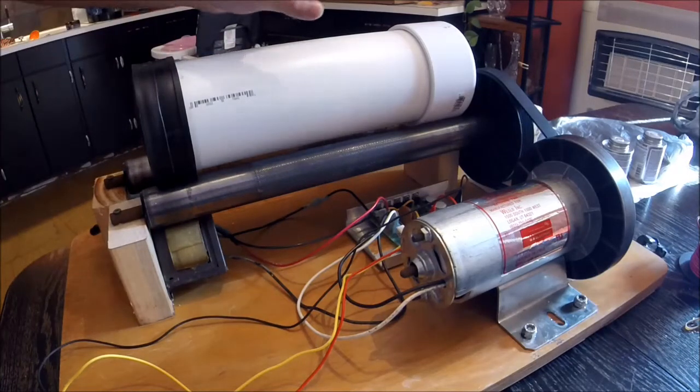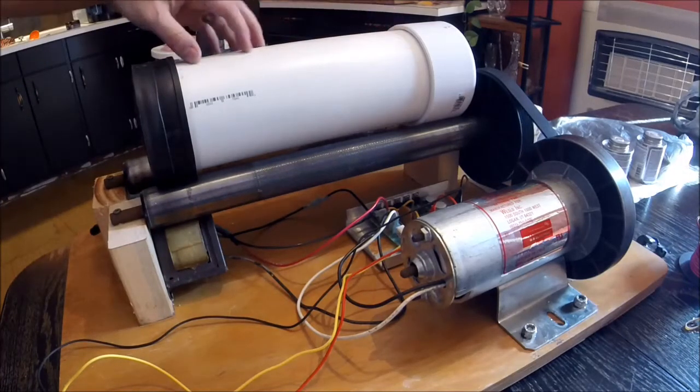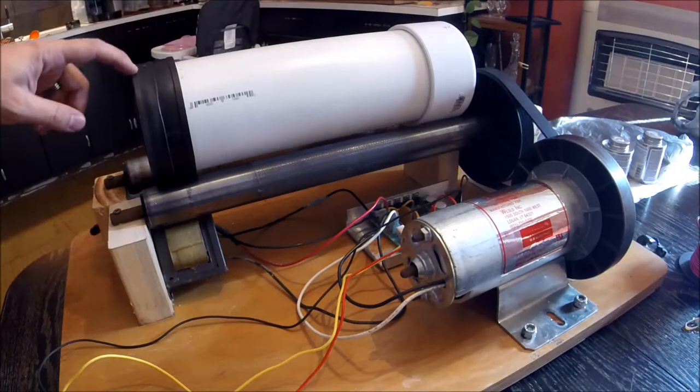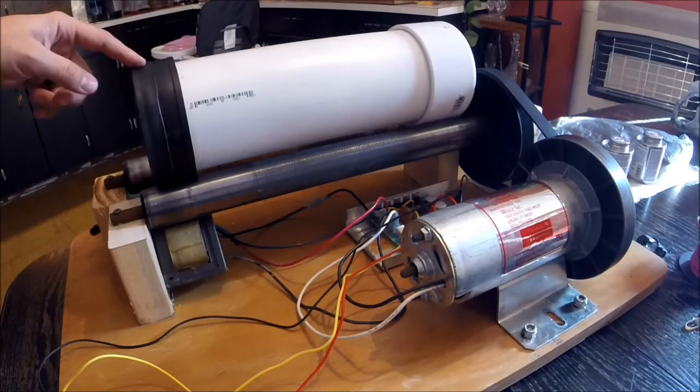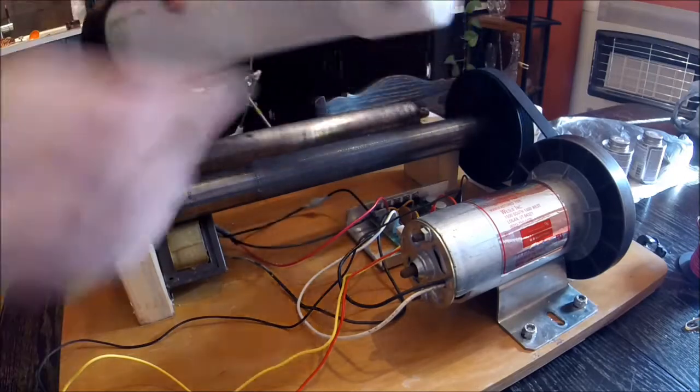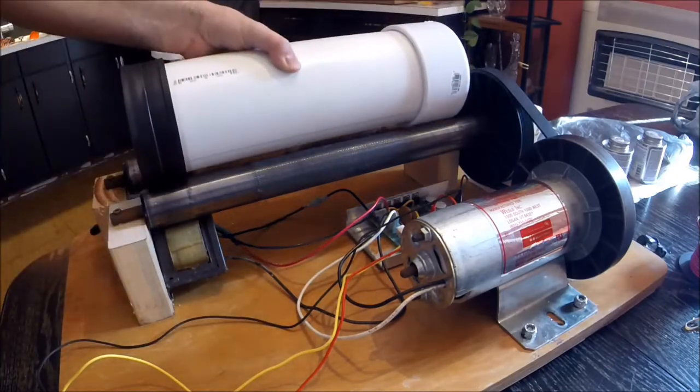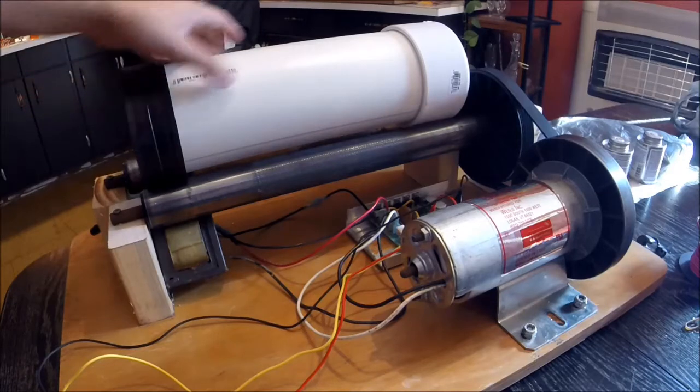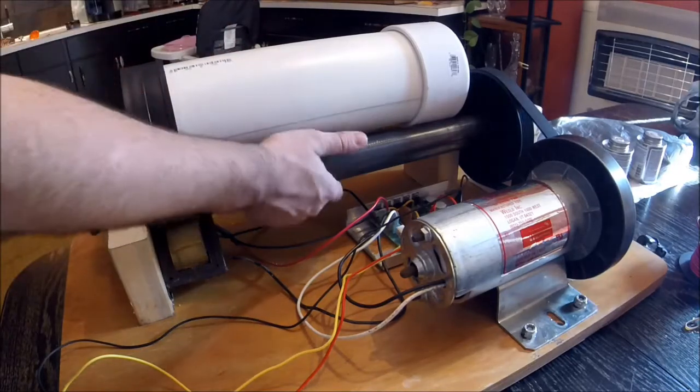So this is a 14 inch piece of 4 inch PVC which has the removable rubber end caps that you can buy at the hardware store. This one has been glued in place, the end cap. And all I have is these are just parts from an old treadmill.